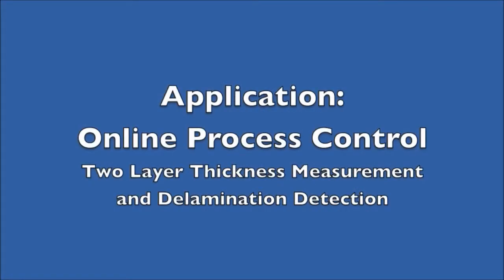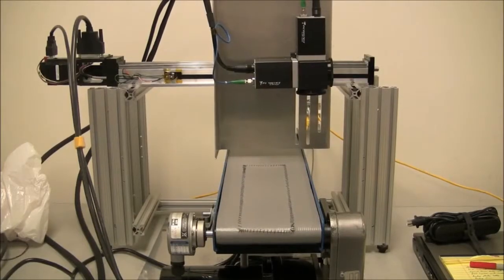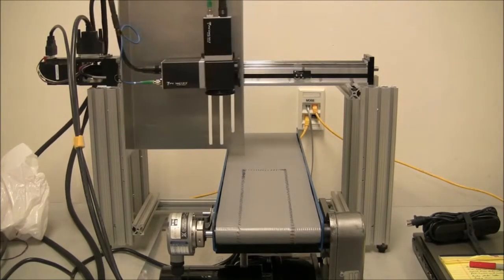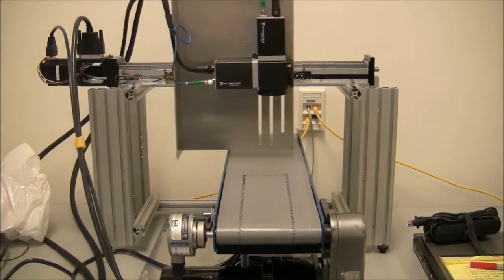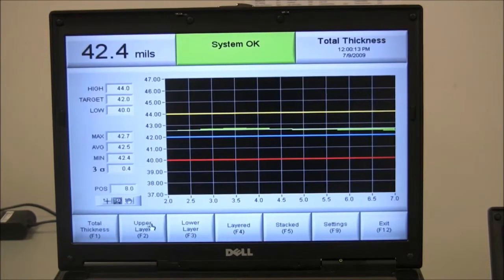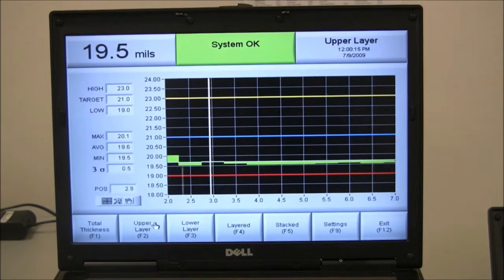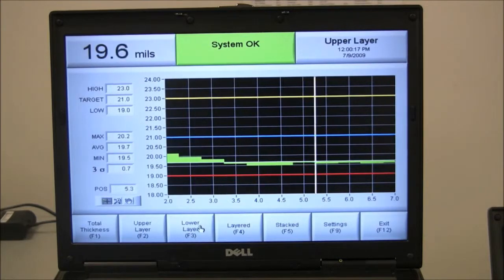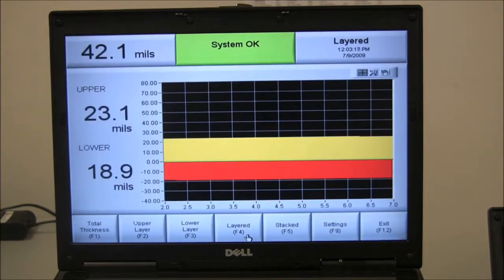Used for online process control, a T-Ray system can replace the radioactive gauges currently used. A sheet of roofing material manufactured with two layers would require two radioactive gauges to measure both layer thicknesses. The T-Ray platform measures the total thickness as well as the upper and lower layer thicknesses simultaneously.